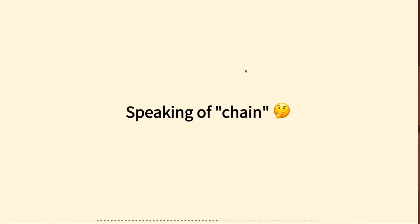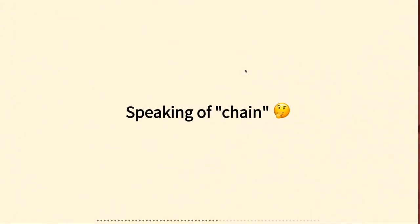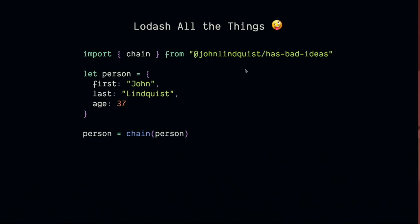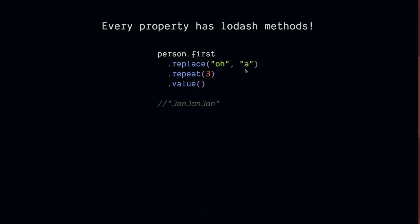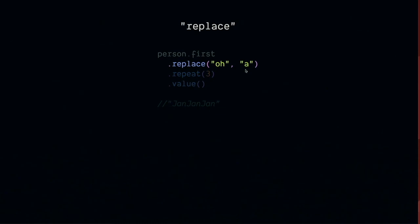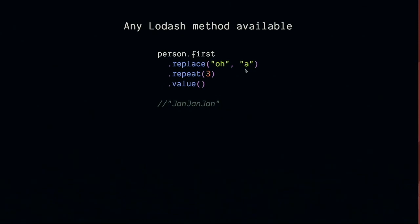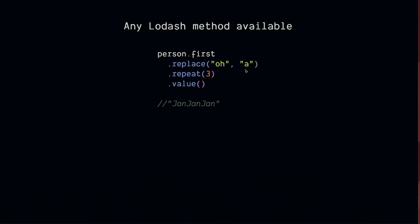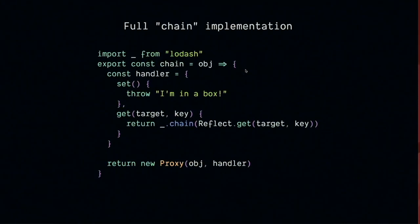Speaking of chain, this gave me another idea: how about we Lodash all the things? You can import chain from this terrible library, invoke chain on the person, and it gives you back a proxy. Now every property on the object has all of the Lodash methods magically. So person.first.replace.repeat.value gives you 'Jan, Jan, Jan.' Again, totally terrible idea — probably pointless. But the full implementation is just importing Lodash, and in the get trap, returning Lodash.chain(target[key]). That's all you had to do to Lodash all your properties on an object.